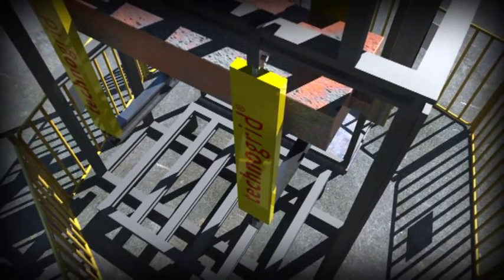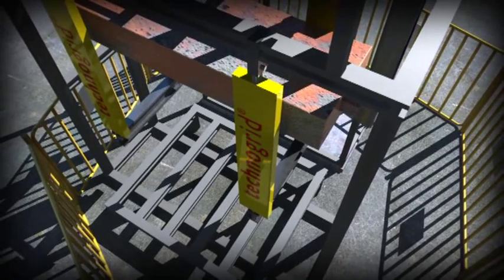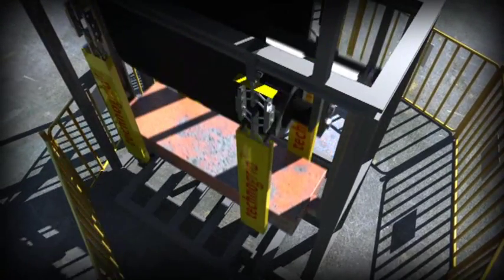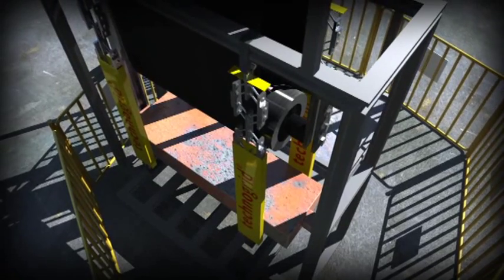Technogrid is a groundbreaking invention that absorbs kinetic energy and allows the safe deceleration of the counterweight before damage and injury to structures, equipment, and people occurs.